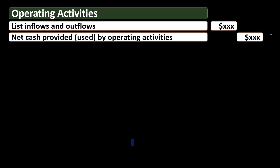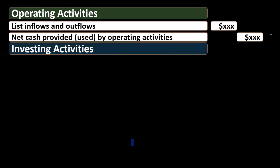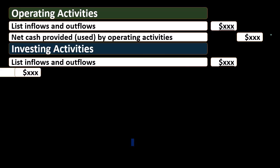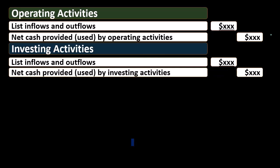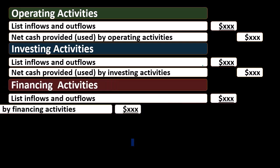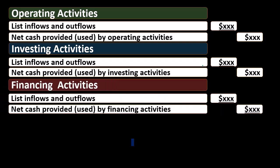Next, we have investing activities, where we list inflows and outflows and then calculate net cash provided or used by investing activities — the same format. There should be far fewer investing activities. This section covers investing in stocks and bonds, as well as investment in long-term assets such as property, plant, and equipment.